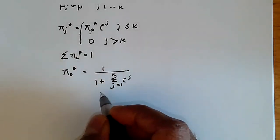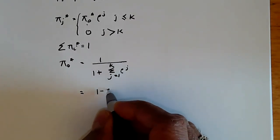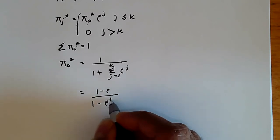j equals 1 to k rho to the j. And using a standard result for sums, for finite sums, this becomes nothing more than 1 minus rho over 1 minus rho to the power k plus 1.